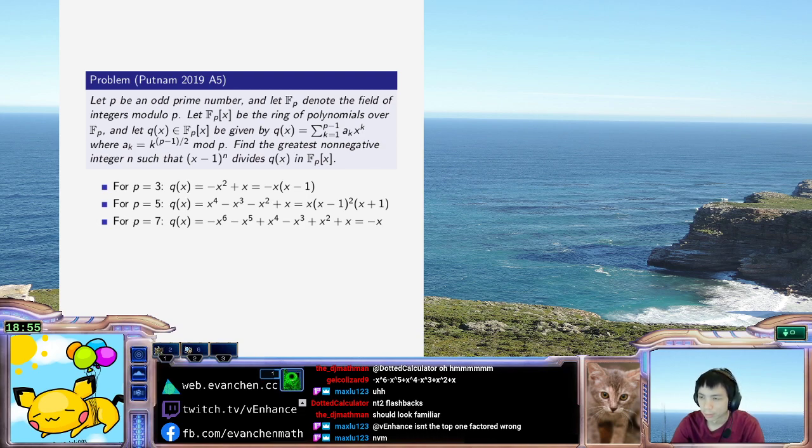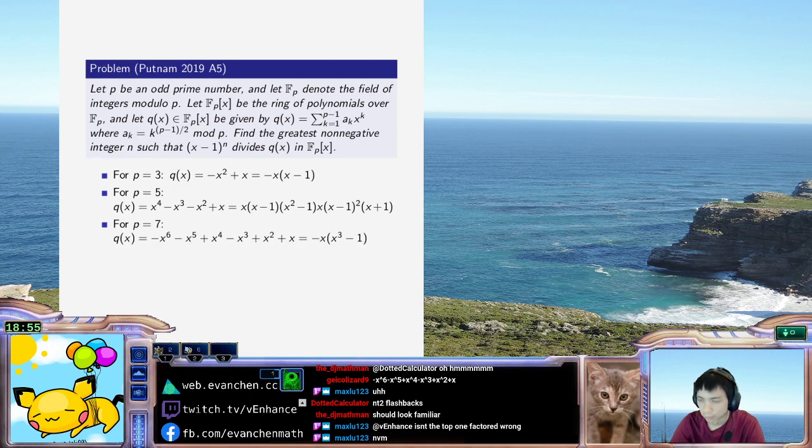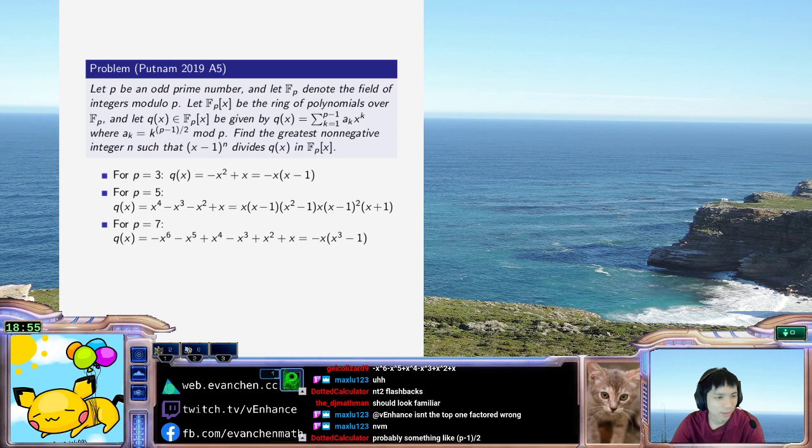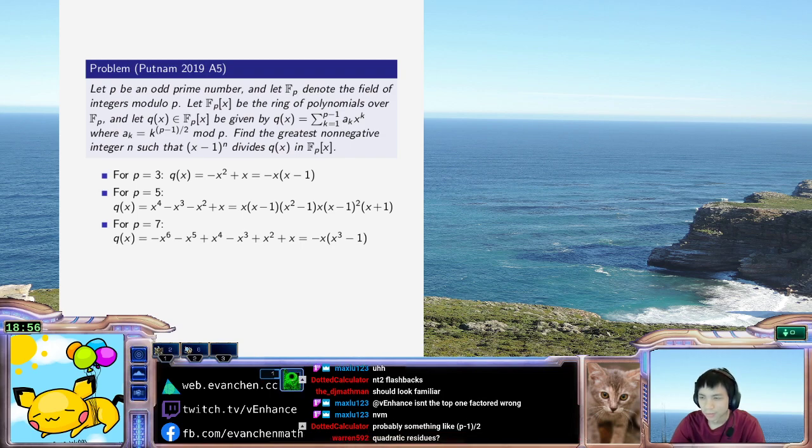X cubed minus one is automatically a factor. I wonder if I should actually write the intermediate steps differently. Like this was X, X minus one, X square minus one. This one is X, X cubed minus one. And then once I factor out X cube, X squared plus one maybe? No, that sounds wrong. No way, no way. Oh man, factor.